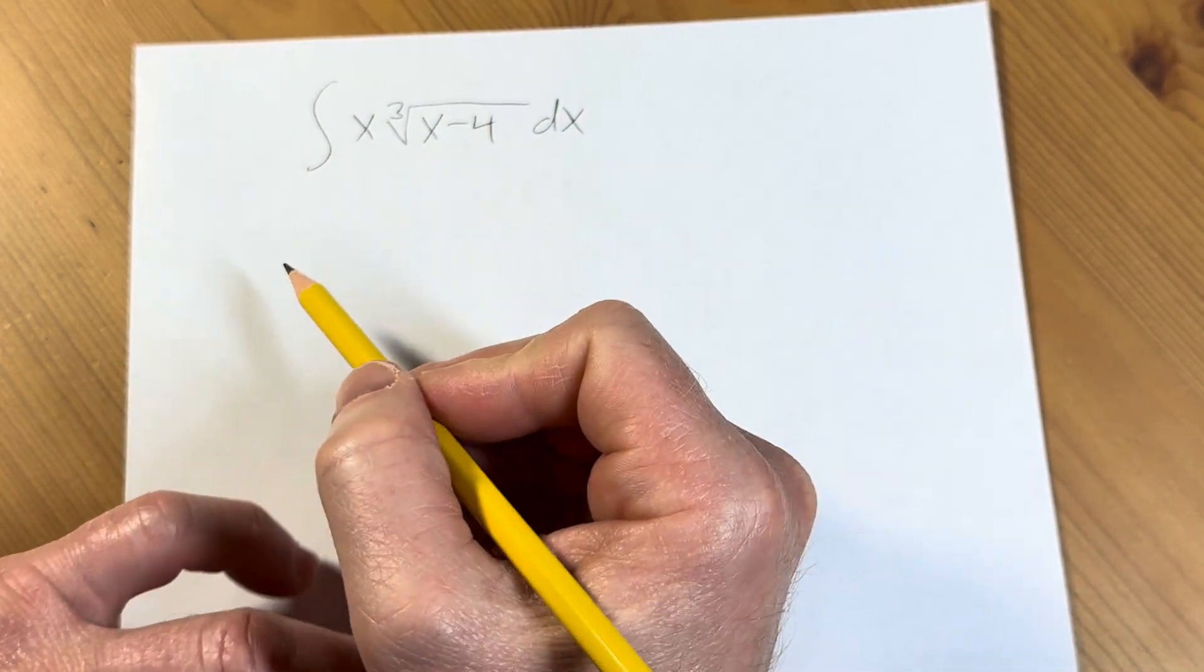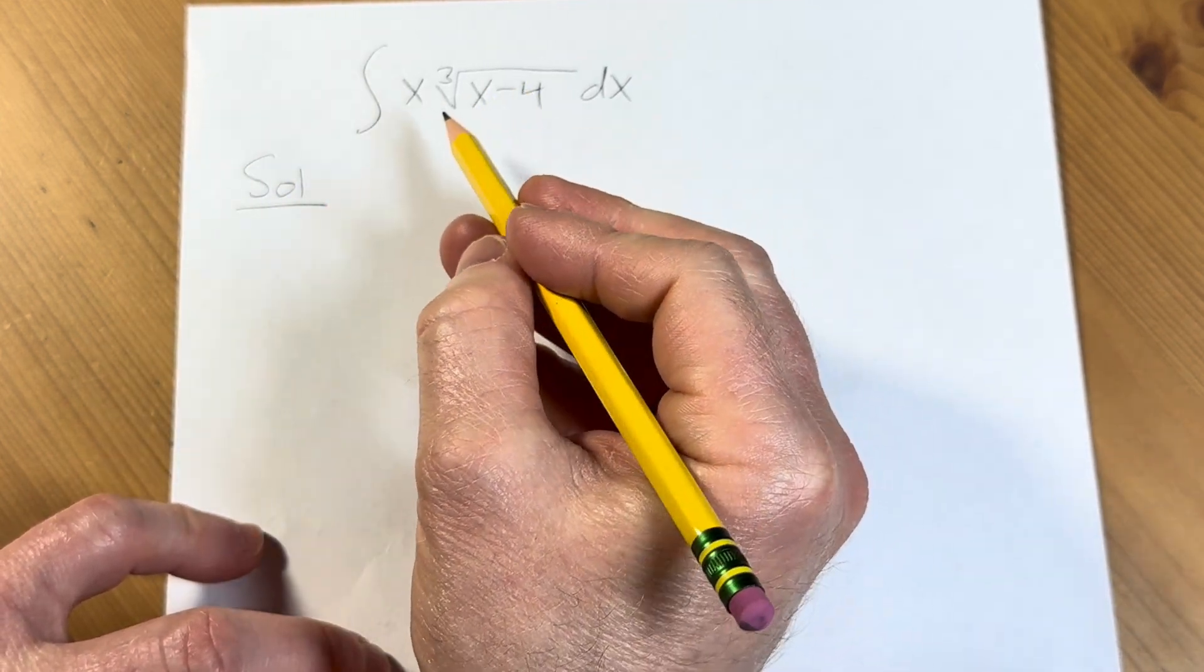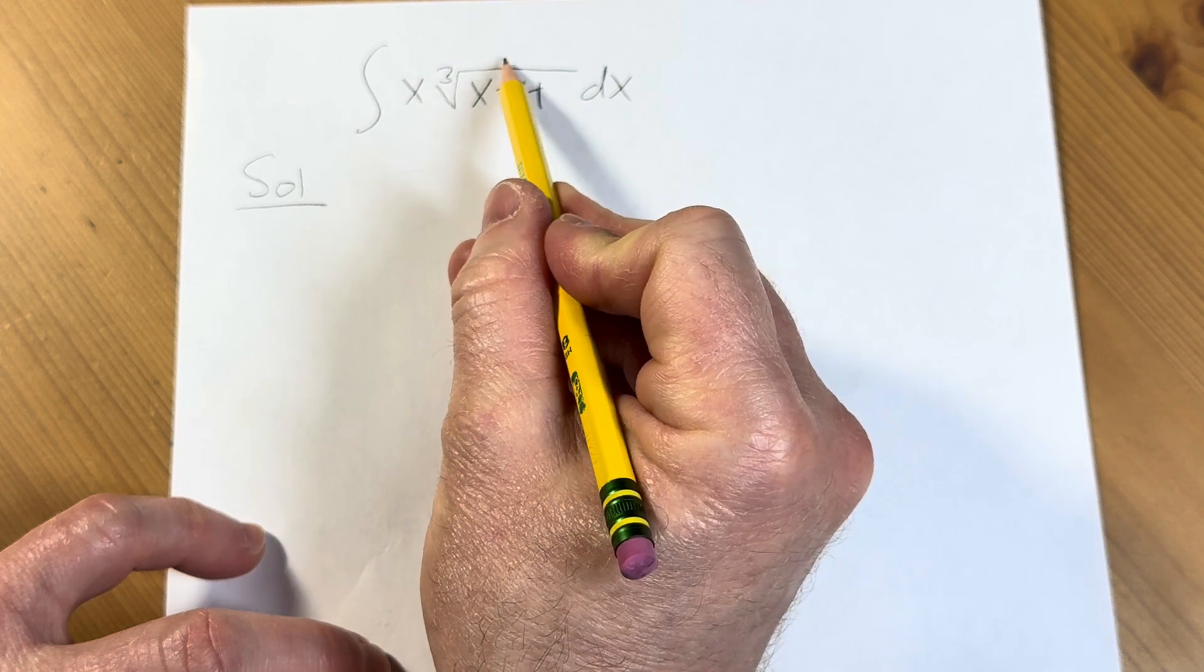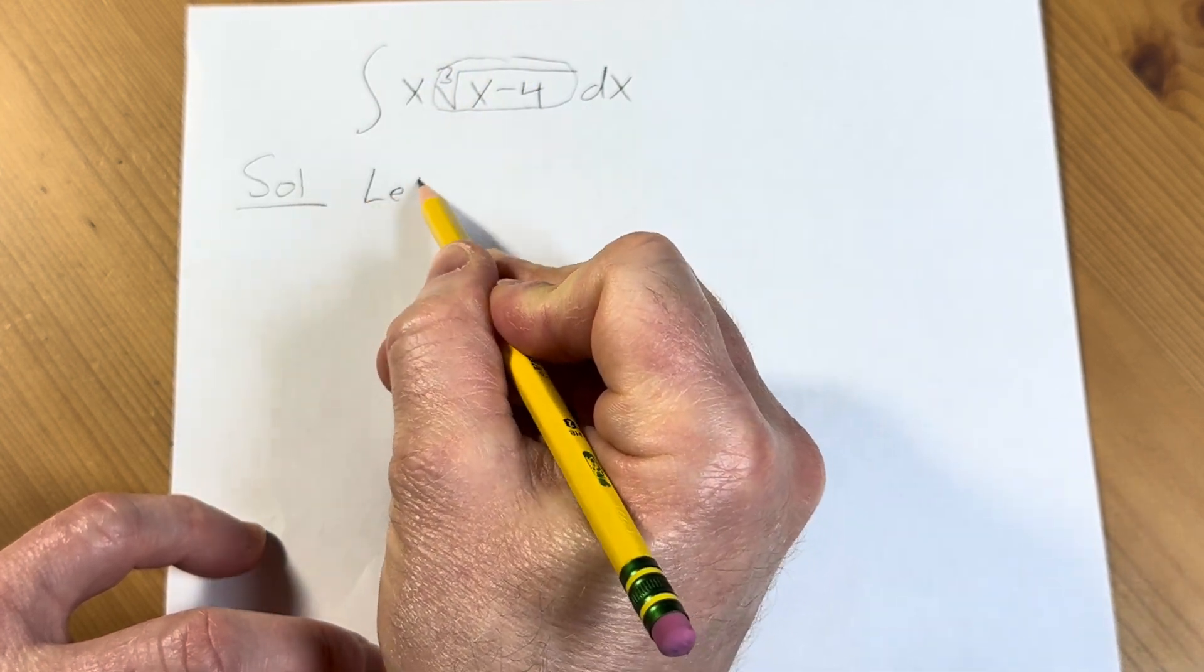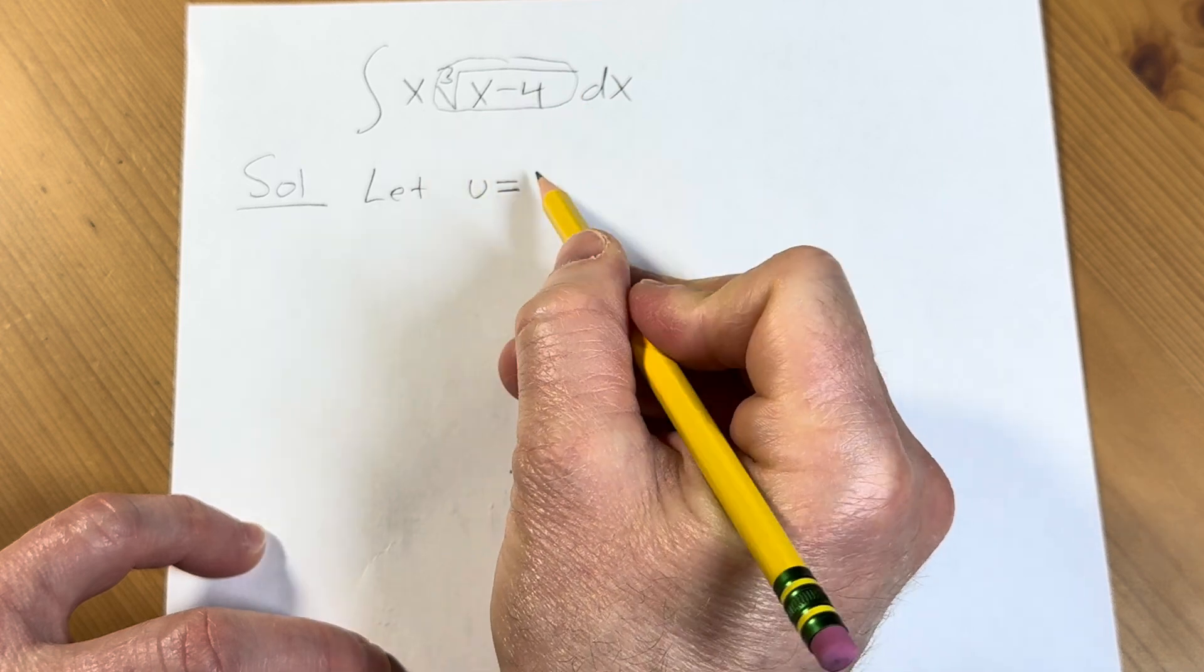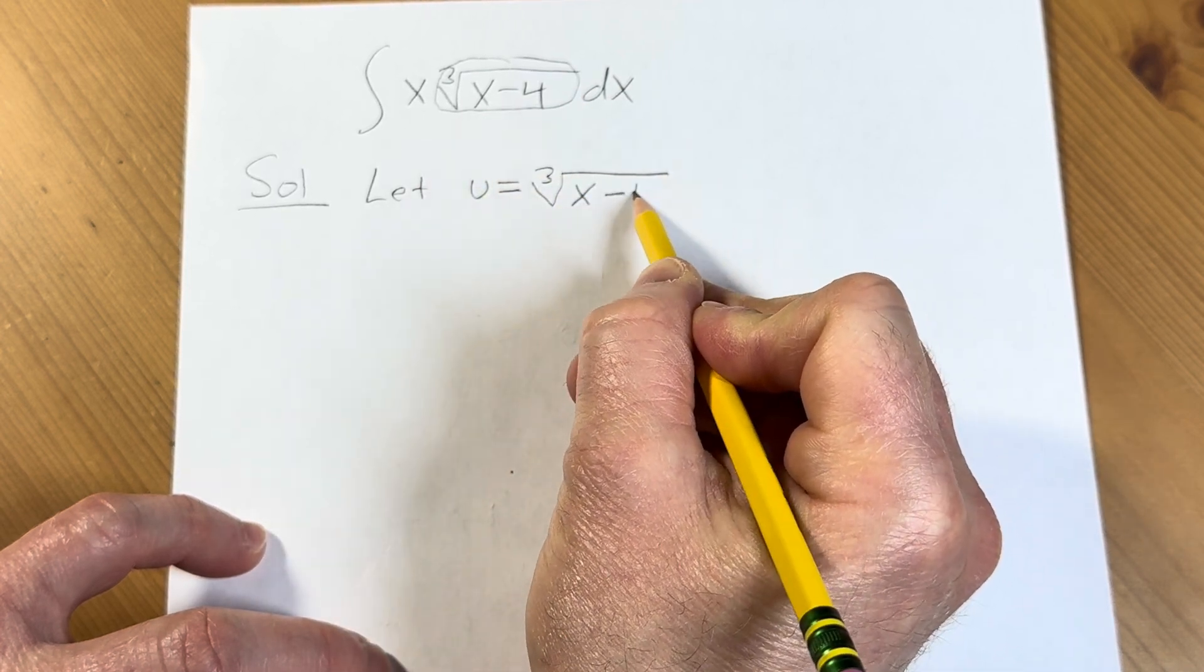Let's go ahead and quickly work through this problem. We'll start by making a substitution. We're going to let u be equal to this entire cube root, so u equals the cube root of x minus 4.